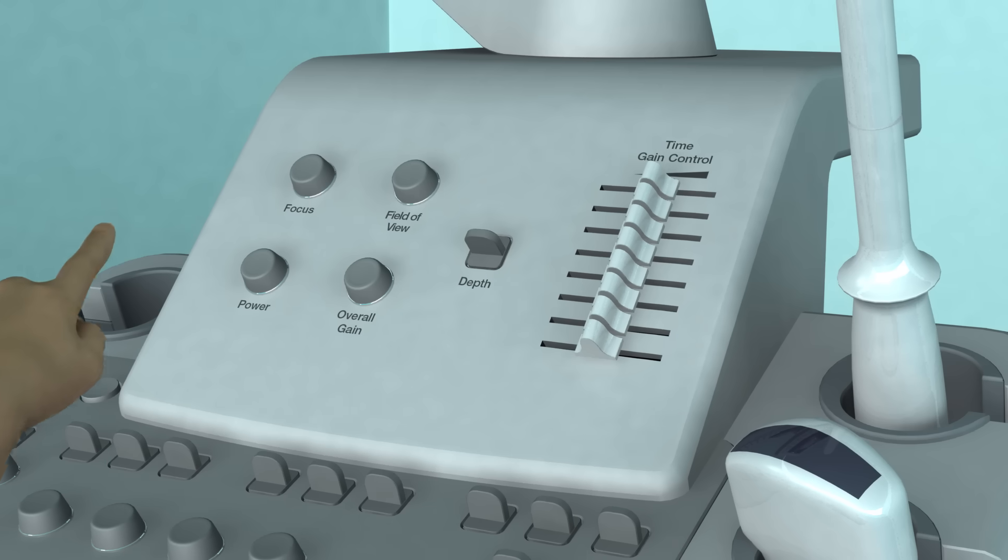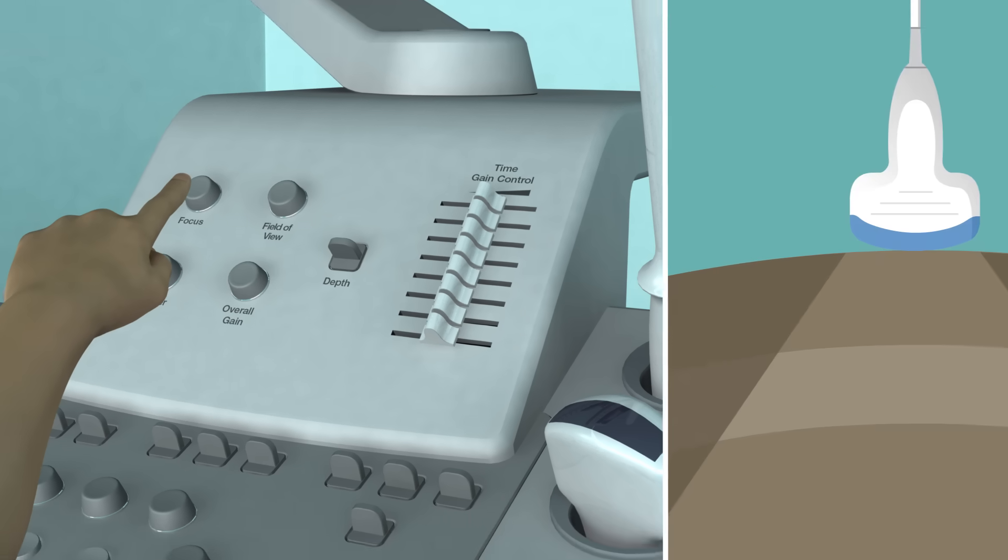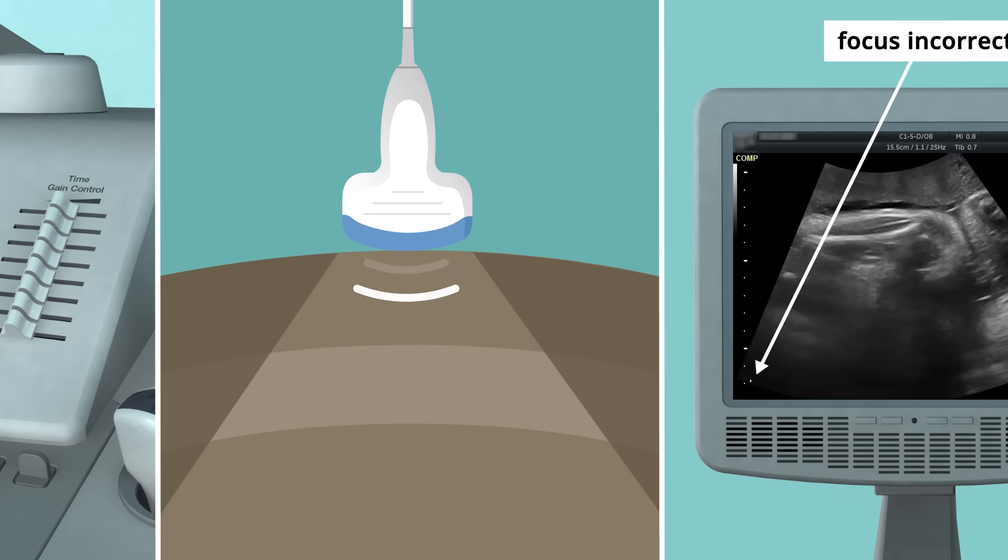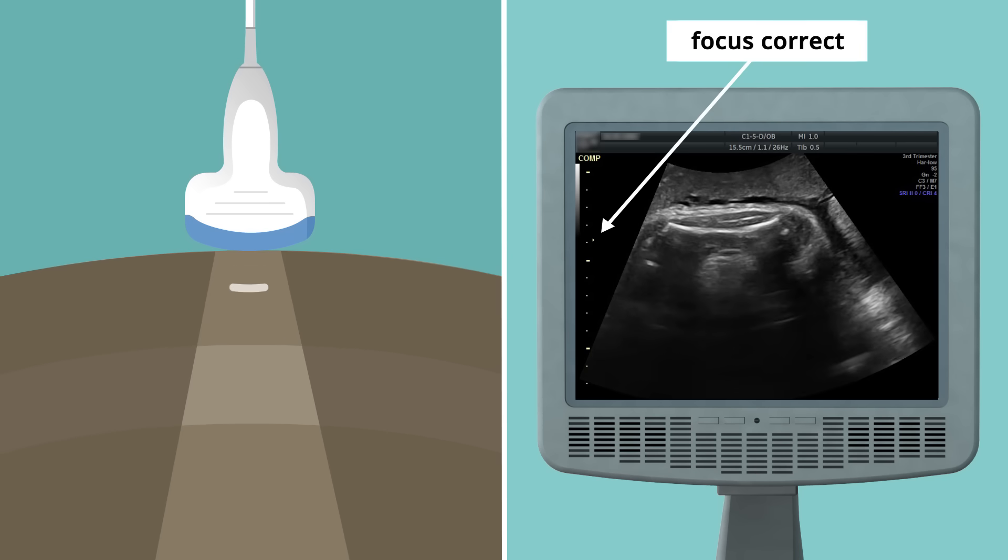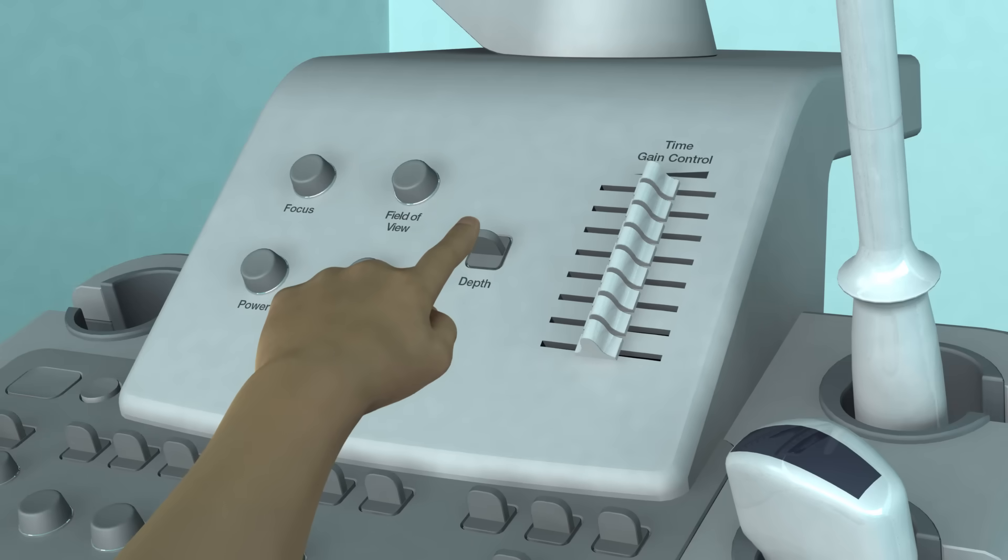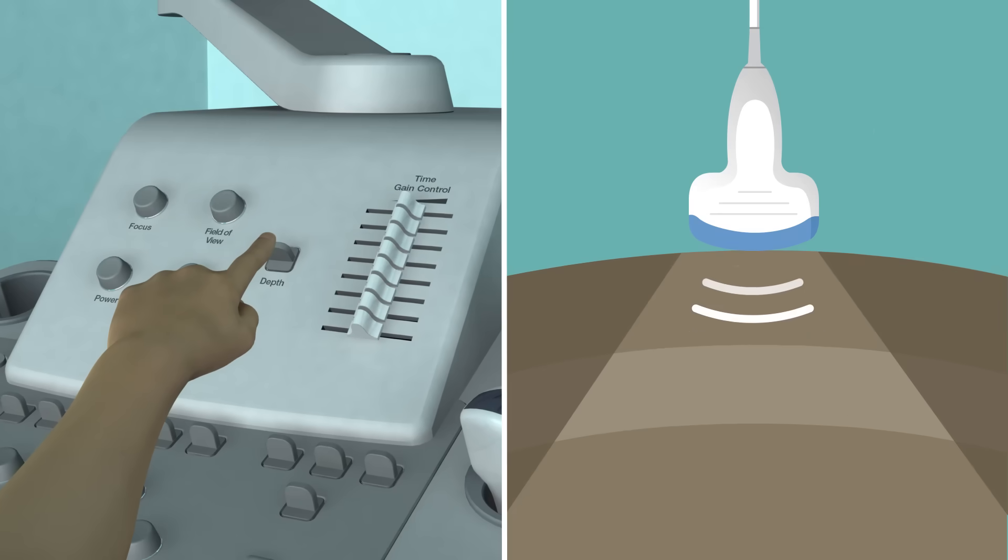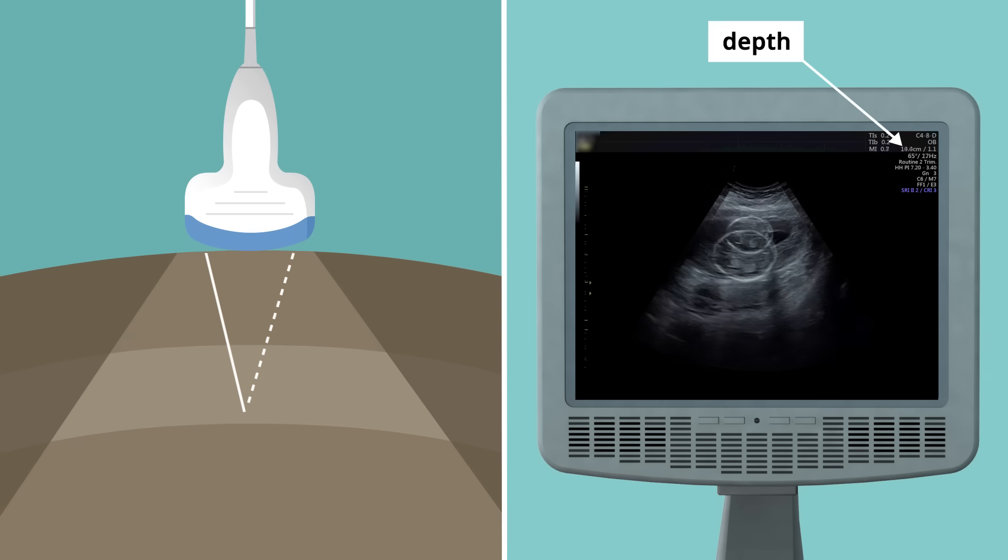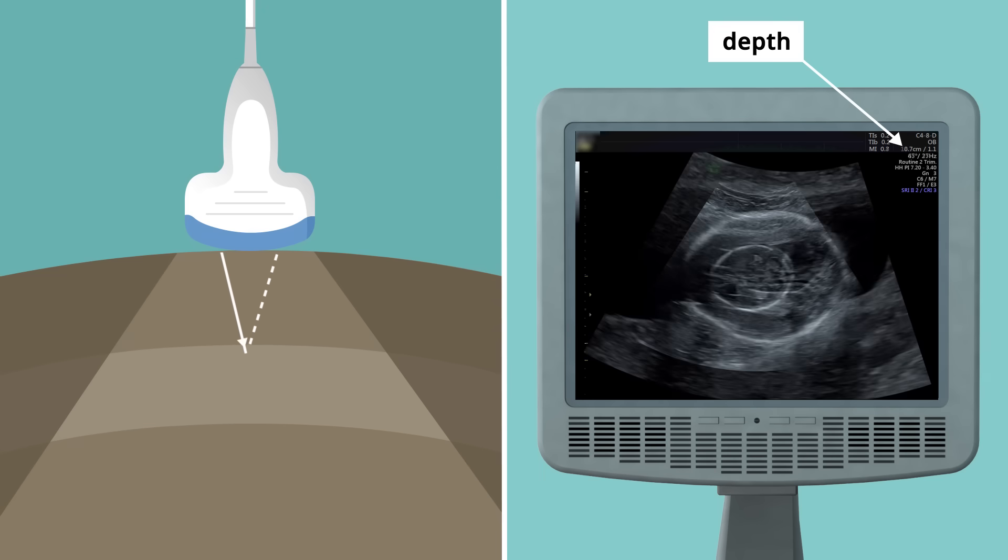The focus control allows you to produce a more detailed image of an area of interest by adjusting the focal point of the beam. The depth control defines the depth of visible area shown in the image. In order to optimize the image resolution, it is important to make sure that the depth selected matches the area of interest.